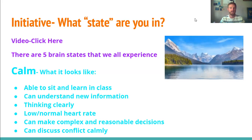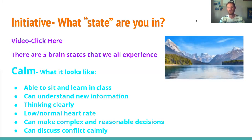In the calm brain state, you can make complex and reasonable decisions. So if something happens with a friend or a teacher asks you to do something, you're able to respond in the way you want to, not just reacting and saying something you're not thinking about. You can also discuss conflict calmly — with friends, teachers, or parents. So if I'm in my calm brain state and talking to a student or another teacher, I'm saying the things I want to say as opposed to things that might pop out without thinking.